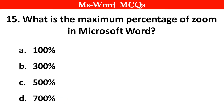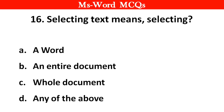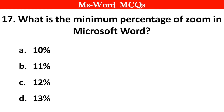Next question: What is the maximum zoom percentage in Microsoft Word? Right answer is option C, 500%. Next question: Selecting text means selecting — right answer is option D, any of the above. Next question: What is the minimum zoom percentage in Microsoft Word? Right answer is option A, 10%.